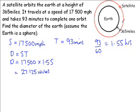That means that when it completes one orbit, the satellite travels a distance of 27,125 miles. In other words, the circumference of this circle is 27,125 miles. Now the circumference is found using the formula c equals pi d. So for this particular circle, 27,125 is equal to pi d.